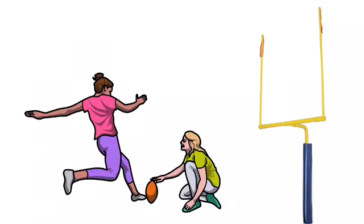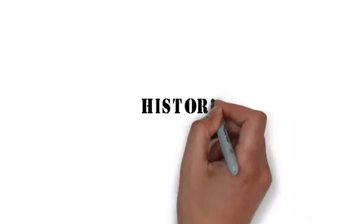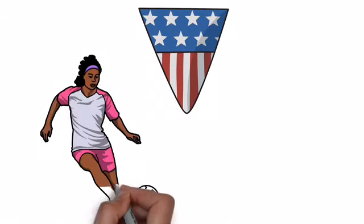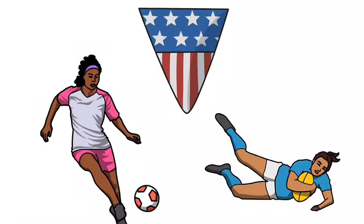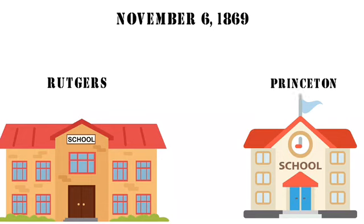History: American football evolved in the United States starting from the games of soccer and rugby. The first American football game was played on November 6, 1869, between two college teams, Rutgers and Princeton, using rules based on the rules of soccer at that time. They consisted of 25 players each.